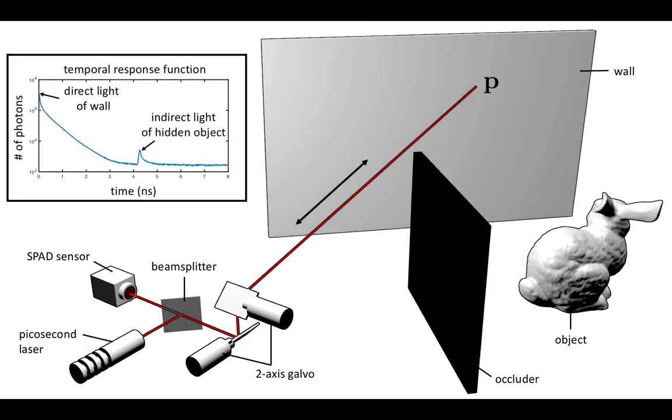The sensor measures a histogram of the arrival times for millions of individual photons. In this example, the histogram contains two impulses, one for the direct light reflecting off the wall, and another for the indirect light reflecting off the hidden object.